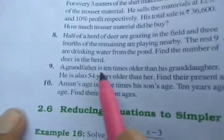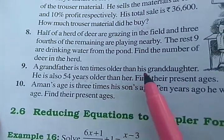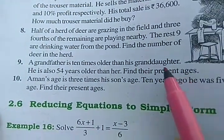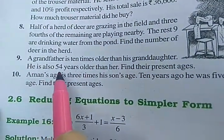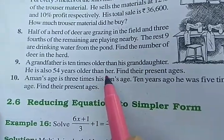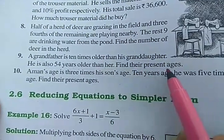A grandfather is 10 times older than his granddaughter. He is also 54 years older than her. Find their present ages.